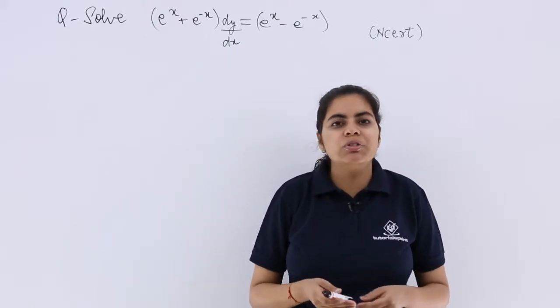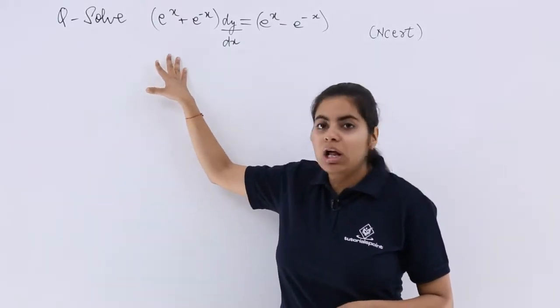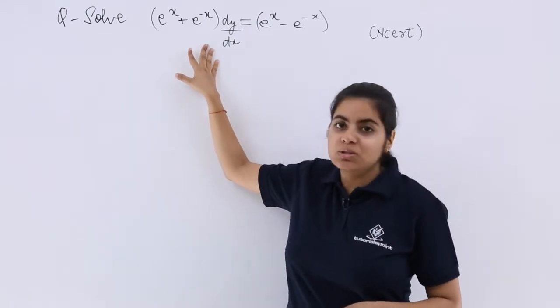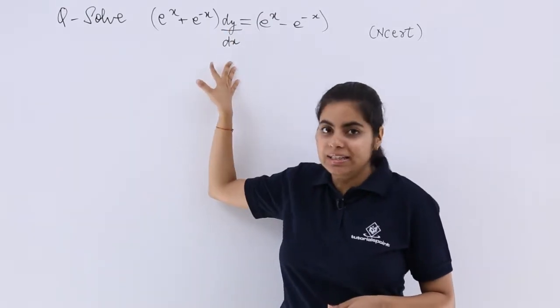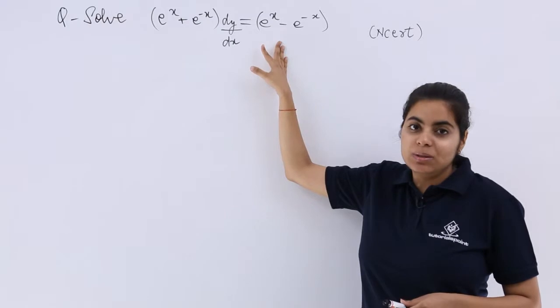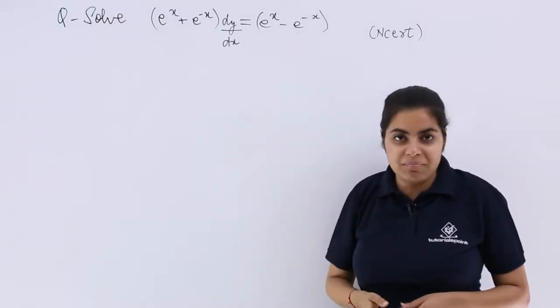This is an NCERT question. It says solve (e^x + e^-x) dy/dx = e^x - e^-x.